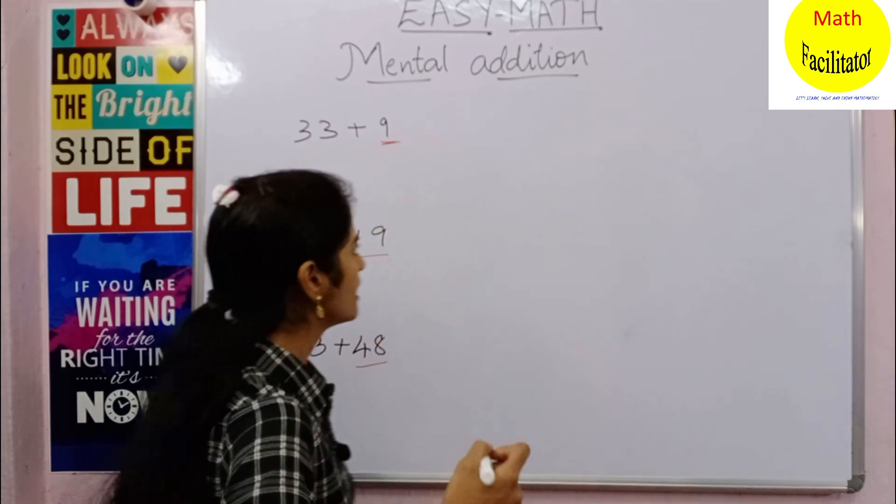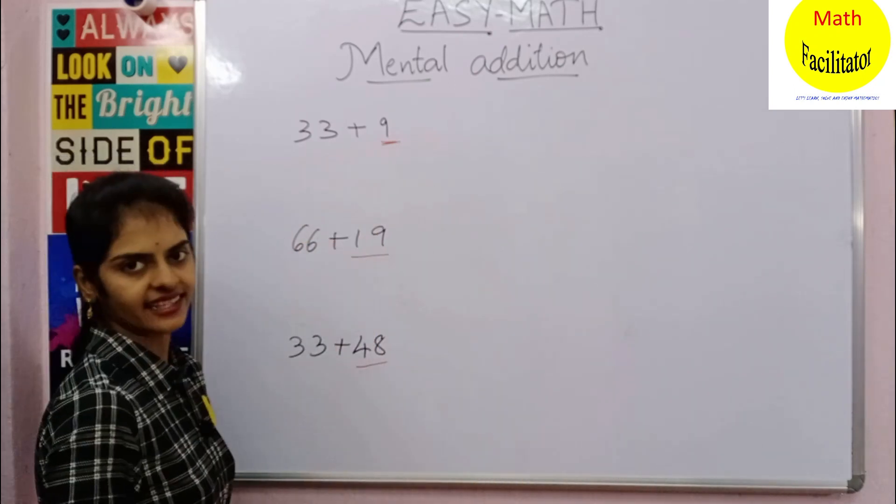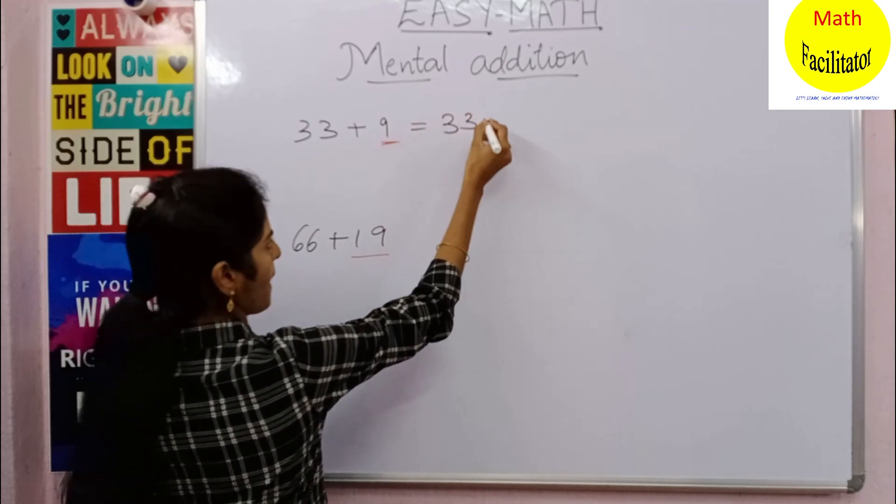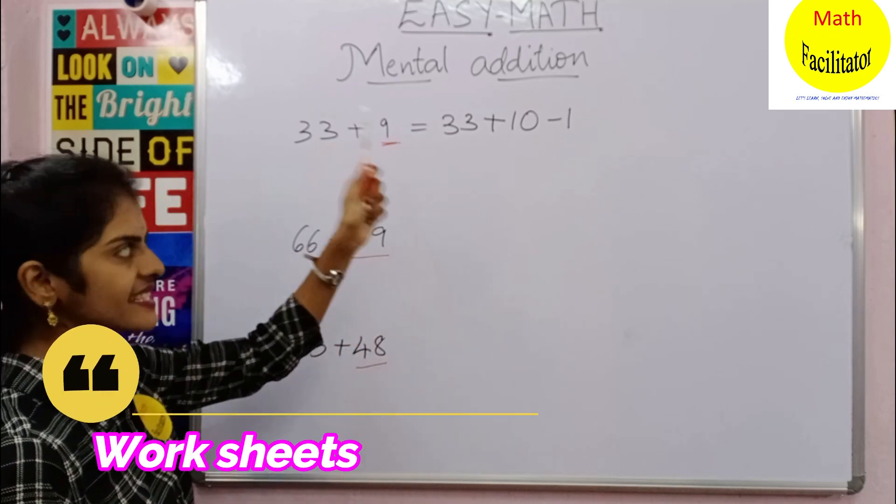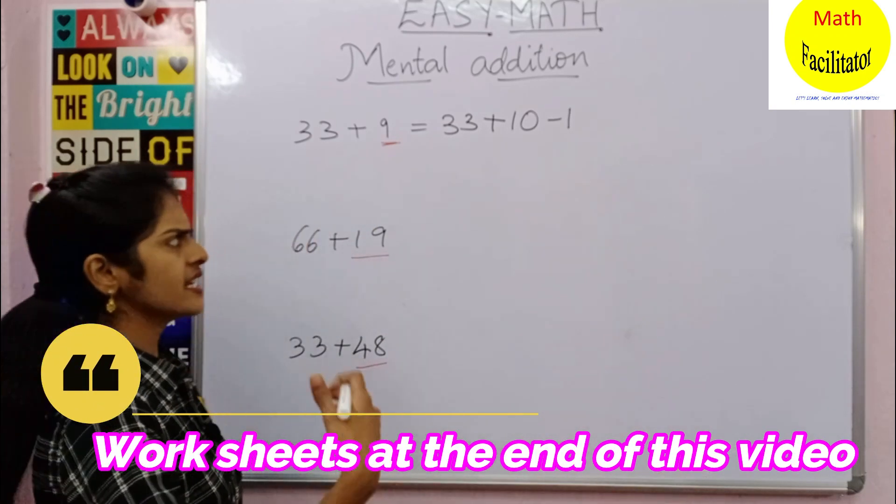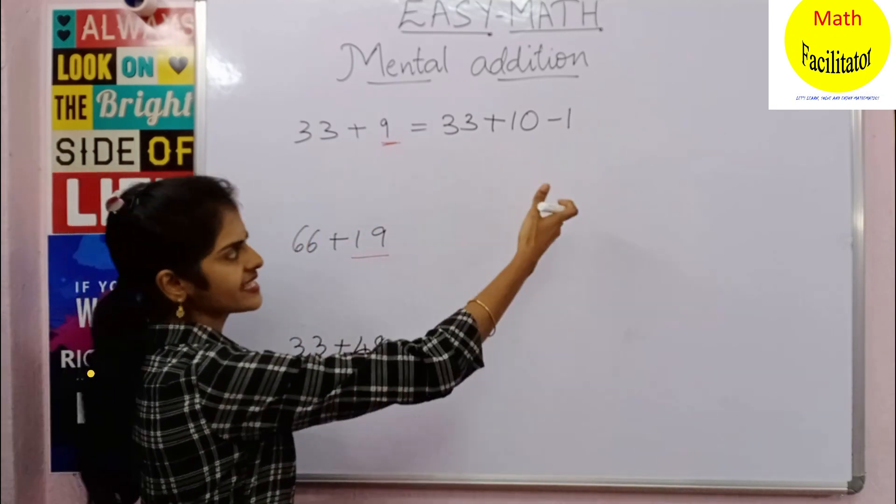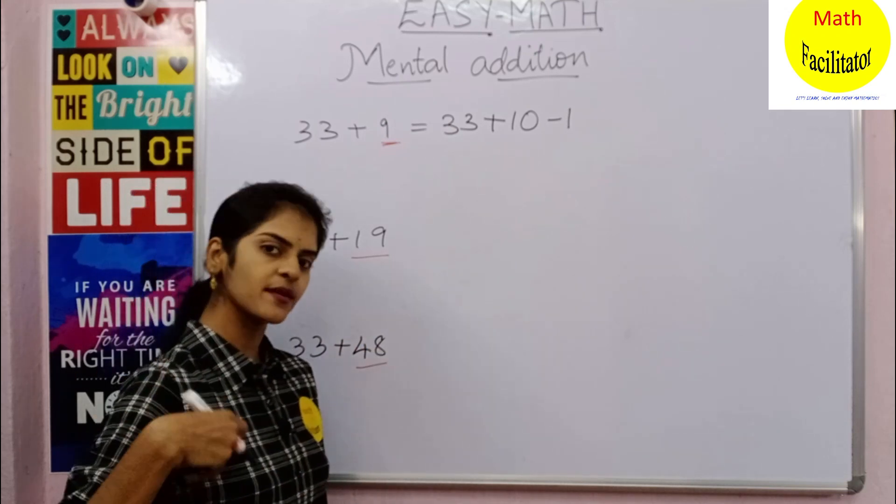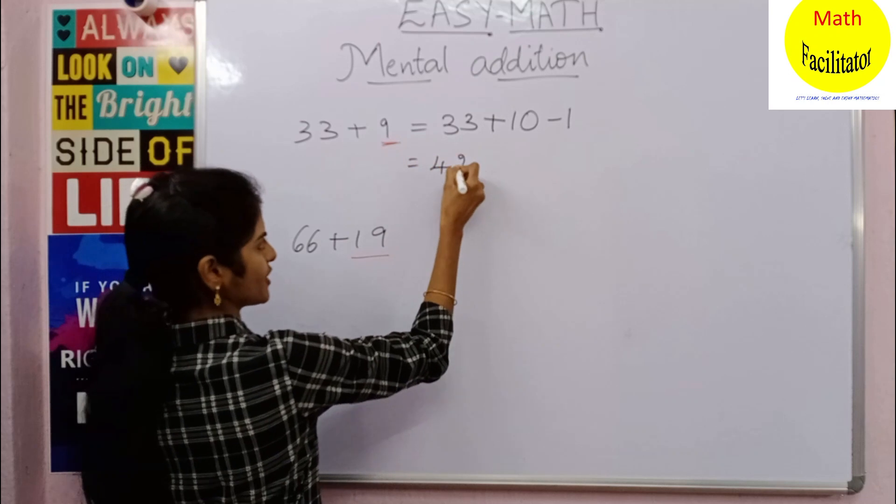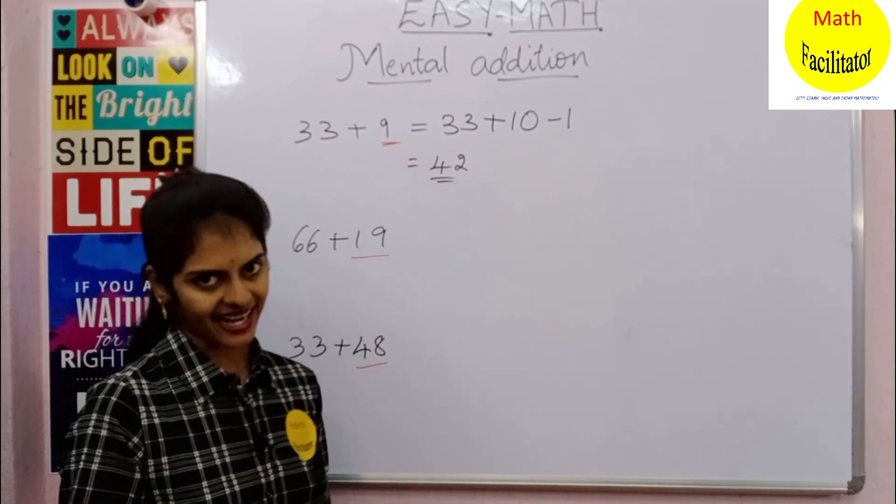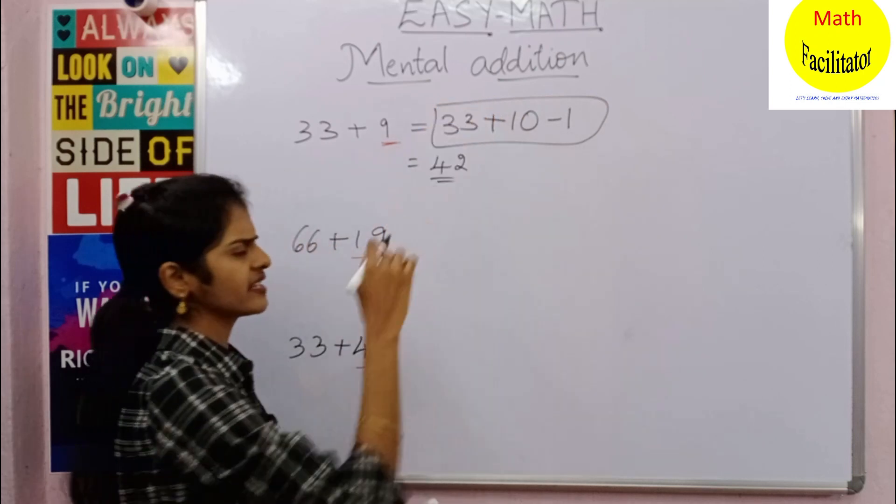So 33 plus 9, I can simply write this as 33 plus 10 minus 1. 9 can be written as 10 minus 1. Now 33 plus 10 is 43, and 43 minus 1 is 42. So the answer is 42. By practice you can even eliminate this step and just do this orally in your mind.